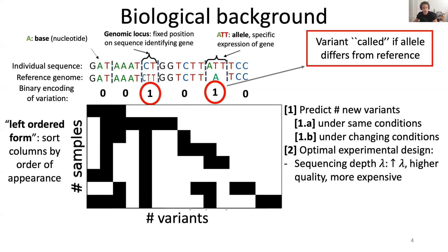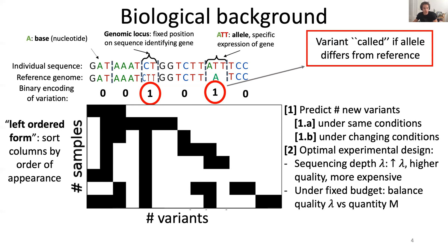Collecting genomic samples is a complex, expensive, noisy process in which the final output depends on a large number of parameters that experimenters can tweak and modify. One crucial aspect of the sampling process is the choice of the sequencing depth or coverage, henceforth denoted by lambda. Intuitively, this scalar parameter quantifies how accurate the measurements are. A higher depth implies higher quality samples, but also more cost and use of resources per observation. A lower depth, vice versa, will lead to coarser and noisier measurements but will be cheaper. So under a fixed budget, we'll have to make a choice between fewer higher-quality samples or more lower-quality samples.